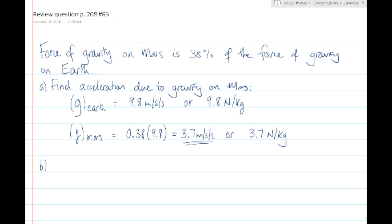Part B of this problem asks how much would a rover that has a mass of 180 kilograms weigh in newtons on Mars? We have this equation to find the force of gravity, which is the same thing as weight. If we were asked how much mass does the rover have on Mars, the answer would still be 180 kilograms. The mass does not vary as the gravitational field strength varies. But the weight, measured in newtons, is a measure of the force of gravity on an object. We know that we have this equation, Fg equals m times g, to find the force of gravity or weight.